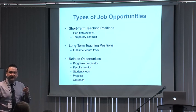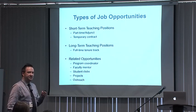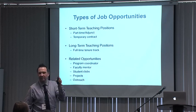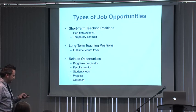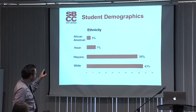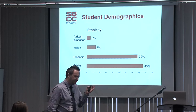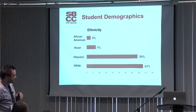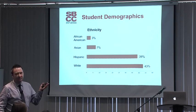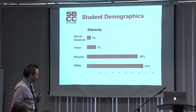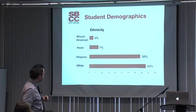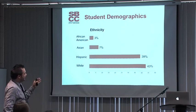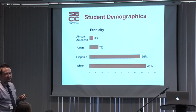One question that comes up is: how is this really different from a teaching opportunity at a UC or four-year institution? It turns out it's actually very, very different — because the student demographics at a community college are very different from what you'd see at a UC. Some of you may have started at a community college, so this is nothing new. But to illustrate that with some data: looking at ethnicity at Santa Barbara City College, using fall 2017 data, most community colleges in California are going to be Hispanic-serving institutions. SBCC has about 40% Hispanic student population, 43% white, 7% Asian, and 3% African American.